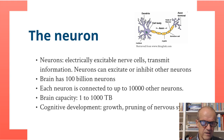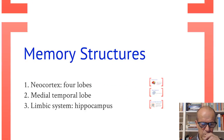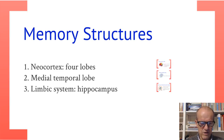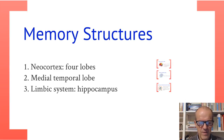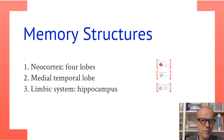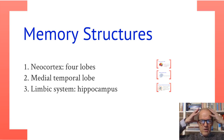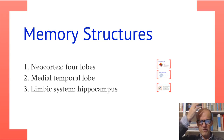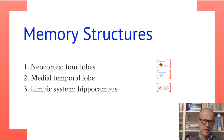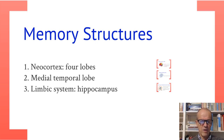So the neuron again is the center. Then we go into the memory structures — the larger structures in the human brain where all these neurons are located. First, we talk about the neocortex, which is the upper and outer part of the brain. Then we have the medial temporal lobe, which is part of the neocortex. And then we also look into a deeper system: the limbic system with the hippocampus.